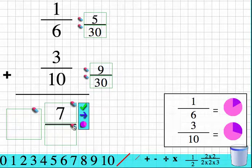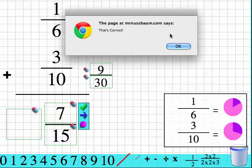drag the 7. Erase 30, drag a 15. And this should do it. Click my check mark. I'm correct. Let's try one more.